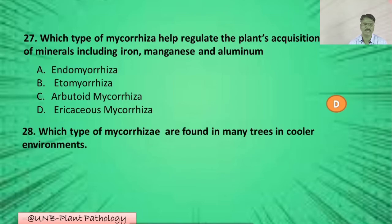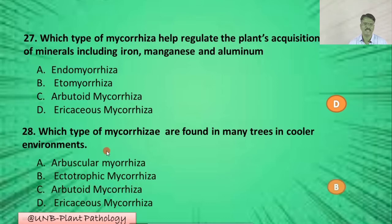Question number twenty-eight: Which type of mycorrhizae are found in many trees in cooler environments? A: arbuscular mycorrhizae; B: ectotrophic mycorrhizae; C: arbuscular mycorrhizae; D: ericoid mycorrhizae. The correct option is B: ectotrophic mycorrhizae.